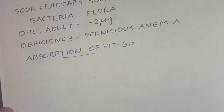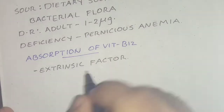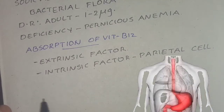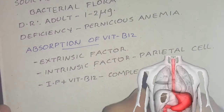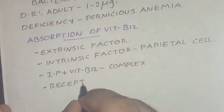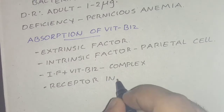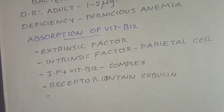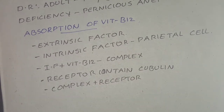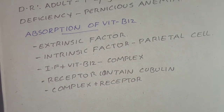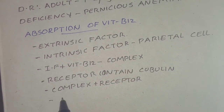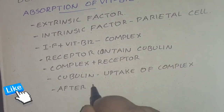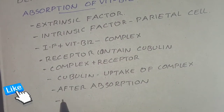Vitamin B12 is also known as the extrinsic factor or anti-pernicious factor. For the absorption of B12 from the intestine, the intrinsic factor — secreted by the parietal cells — is required. The intrinsic factor combines with B12 to form a complex, and the receptor cubilin, which is a high-affinity apolipoprotein, attaches to this complex. Cubilin is responsible for the uptake of the complex into the enterocyte by endocytosis.